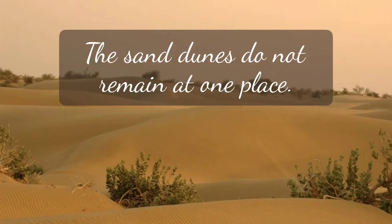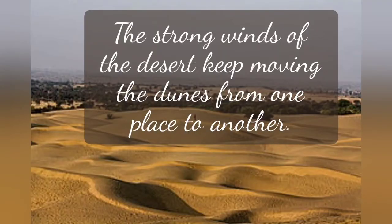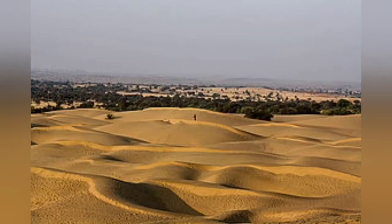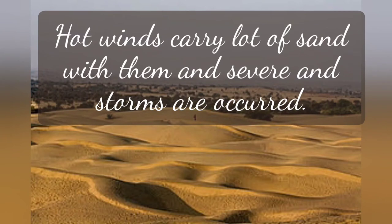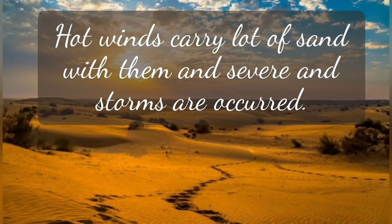These hills keep on shifting from one place to another — they are not stable. They keep shifting because the sand is very light, and whenever the wind blows, it gets carried away, causing the dunes to shift from one place to another. Also, the hot winds carry a lot of sand with them, and severe sand storms are quite common here in the desert.